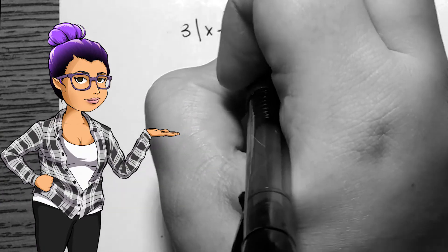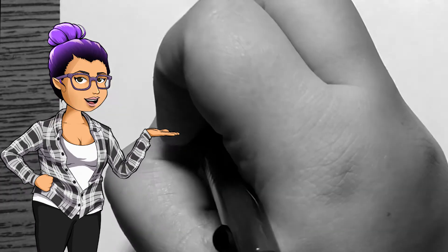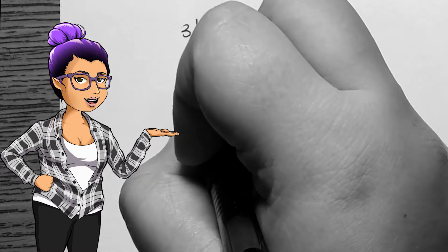Given the equation 3 times the absolute value of x minus 2 equals 3, I should first solve for the absolute value, as that will help make more clear the functions involved in the piecewise function.